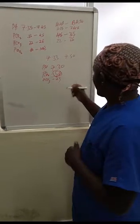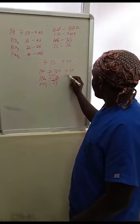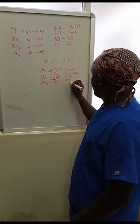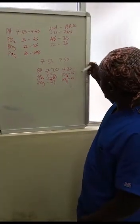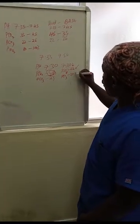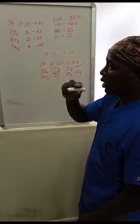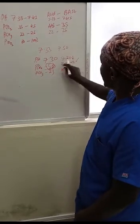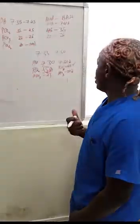Here is another example: pH is 7.30 (acidosis), pCO2 is 42 (normal), and bicarbonate is 20 (low). The pH is low, the pCO2 is normal, and the bicarbonate is low. For bicarbonate, it goes in the same direction as pH. So you see the pH is low and the bicarbonate is low — this means the patient is having metabolic acidosis.